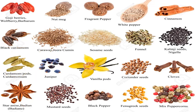This photograph shows various spices and their names. We have goji berries (wolf berry), nutmeg (jaifal), fragrant pepper, white pepper, cinnamon, black cardamom, caraway (jeera/cumin), sesame seed (til), fennel, kalonji seeds (nigella), cardamom pods (elaichi), juniper, vanilla pods, coriander seeds, cloves, star anise (berian), mustard seeds, black pepper, fenugreek seeds, and mixed peppercorns, in addition to other spices.